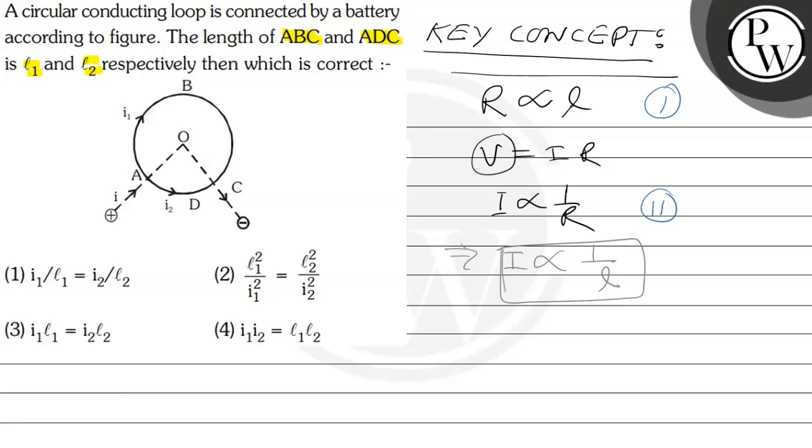It means that this will be the current. From that we can write I into L constant, since I1 L1 equal to I2 L2.